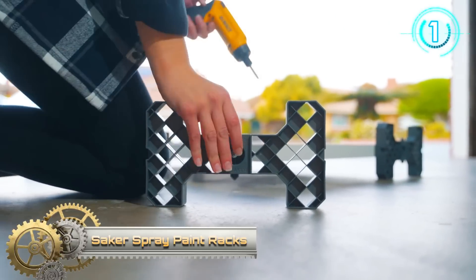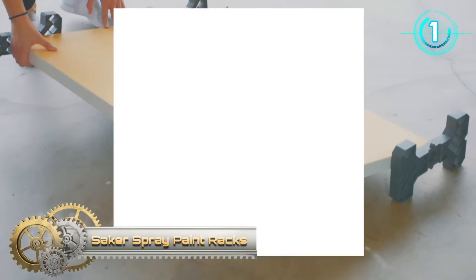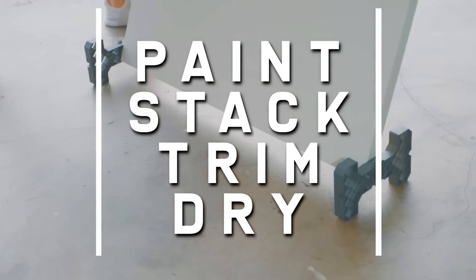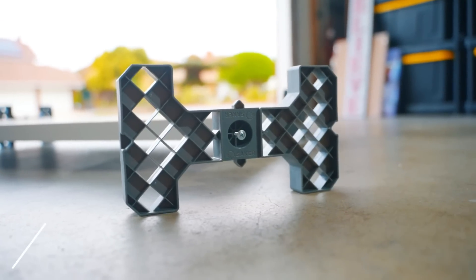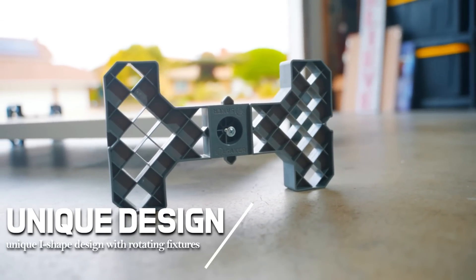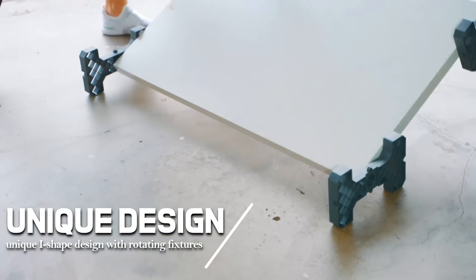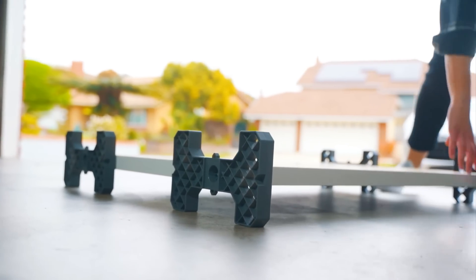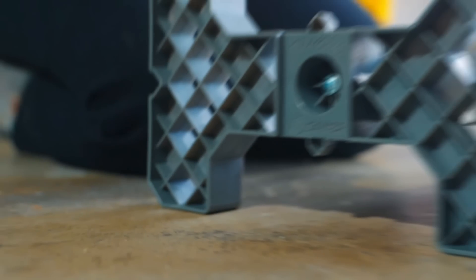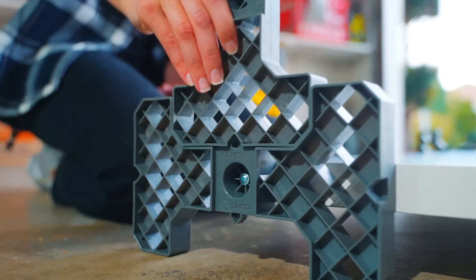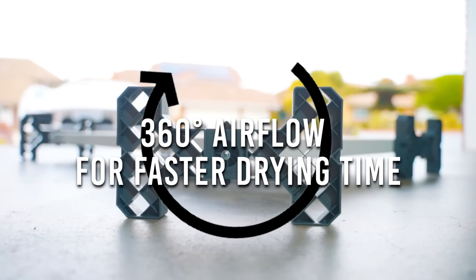Saker Spray Paint Racks. Paint, stack, trim, and dry doors with absolute ease. Saker Spray Paint Racks feature a unique chi-shaped design with rotating fixtures that completely changes how you paint. With Saker, all you have to do is flip the board when you're ready to do the other side. Its innovative design also allows a 360-degree airflow for faster drying.